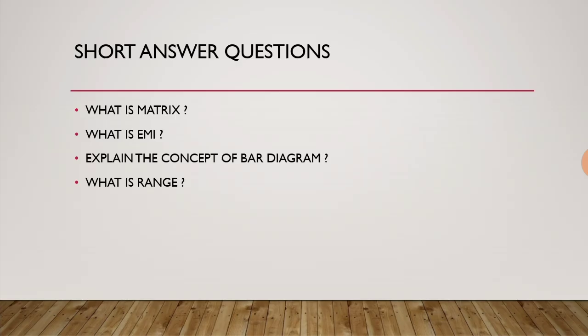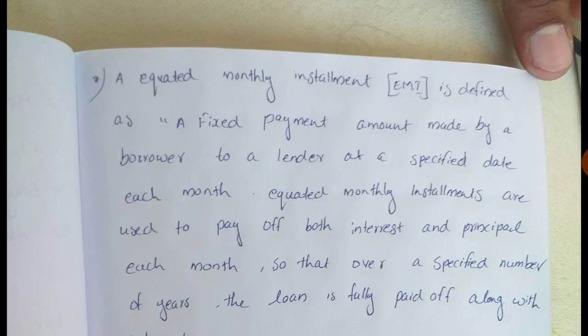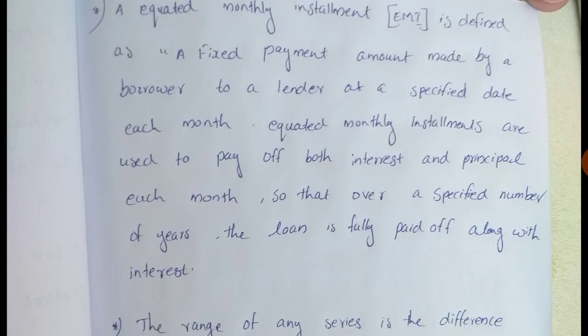What is EMI? An Equated Monthly Installment, or EMI, is defined as a fixed payment amount made by a borrower to a lender at a specified date each month. Equated monthly installments are used to pay off both interest and principal each month, so that over a specified number of years the loan is fully paid off along with the interest.